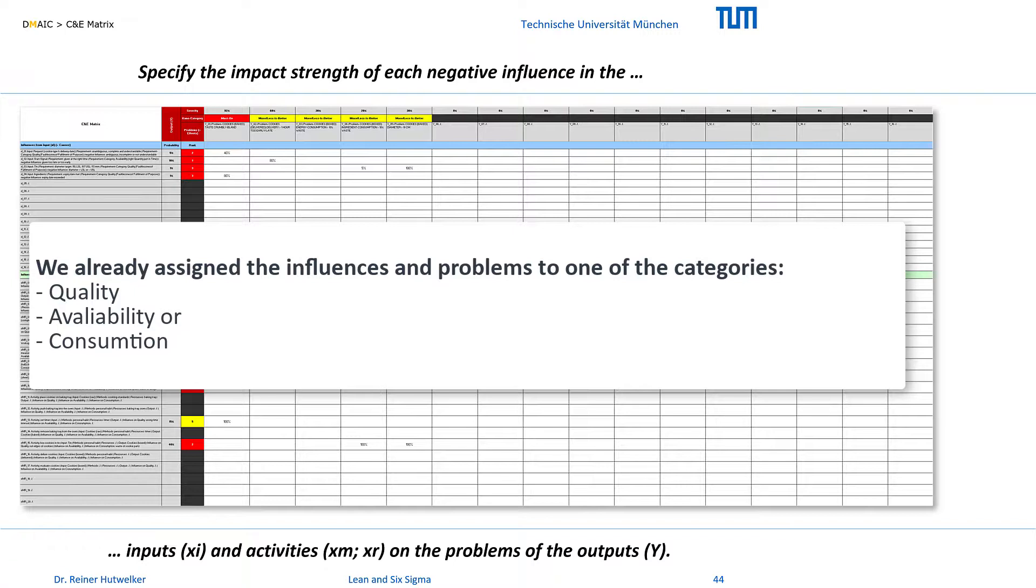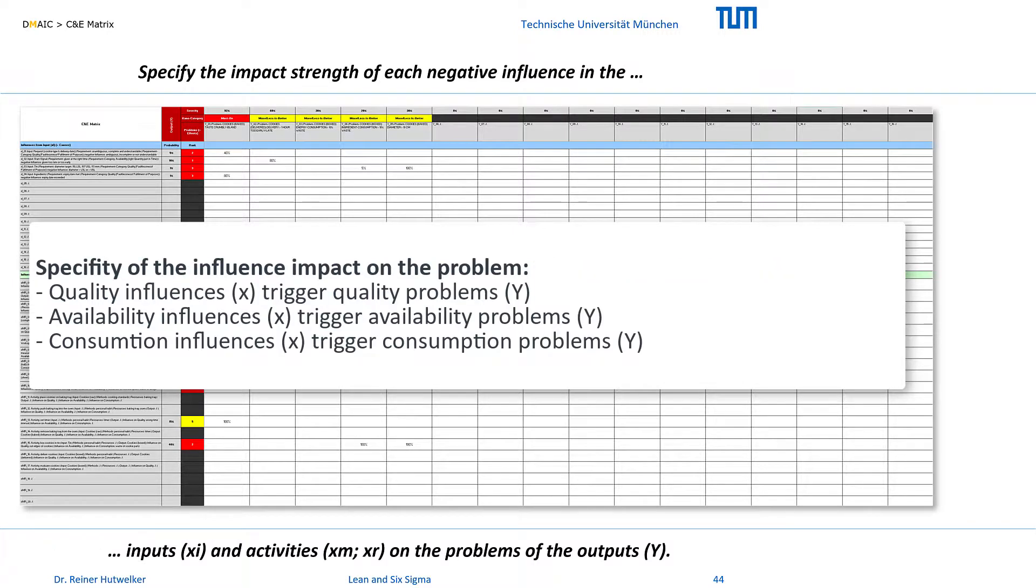Furthermore, in the previous tools, we have already assigned the influences and problems according to their type of impact and deviation to one of the categories quality, availability or consumption. Logically comprehensible, quality problems are primarily caused by influences on quality, and not by influences on availability or consumption. This specificity between trigger and problem can therefore simplify the overview and processing of many cells.